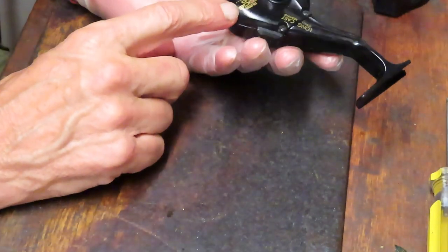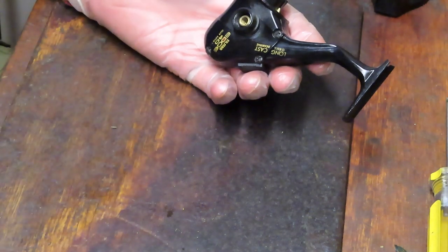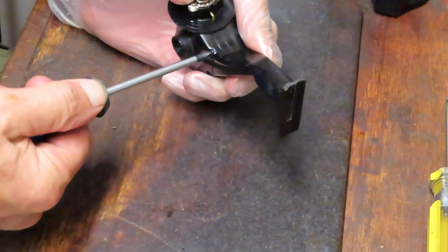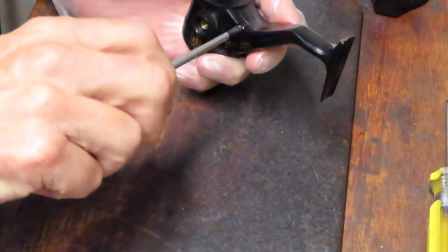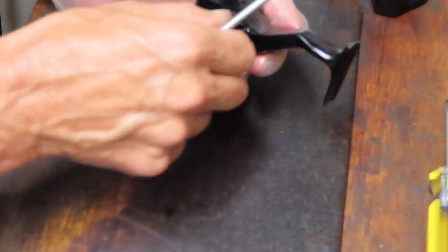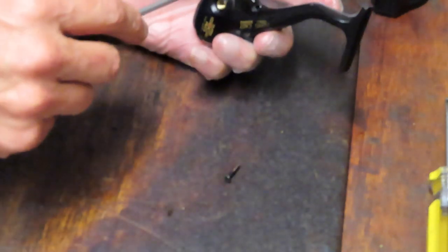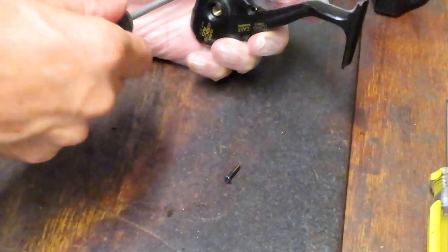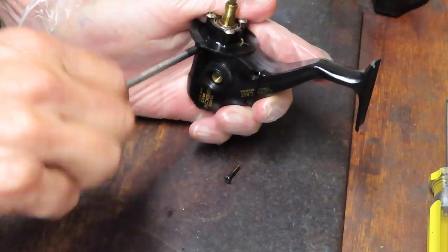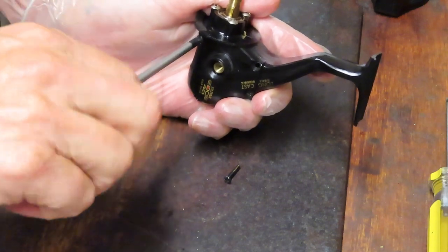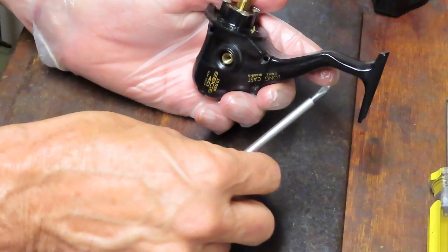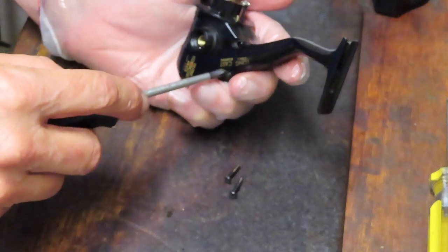Let's go ahead then and open up the side case. There's four side plate screws. They are Phillips head screws. So let's go ahead and take those out and we'll see what's driving this reel underneath. Now when I take those side plate screws out I lay them out on my workbench here.